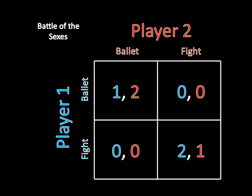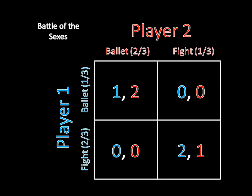So how do we go about doing this? Well, the first step is to find the mixed strategy Nash Equilibrium. Because we've done this in the last video, we already know what it is: player one goes to the ballet one-third of the time and the fight two-thirds of the time, and player two goes to the ballet two-thirds of the time and the fight one-third of the time. I recommend actually writing these probabilities down next to the strategies for each player, because this is going to be important for the next step, which is to multiply all these things out.